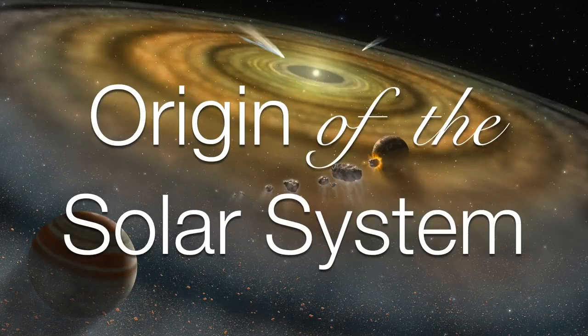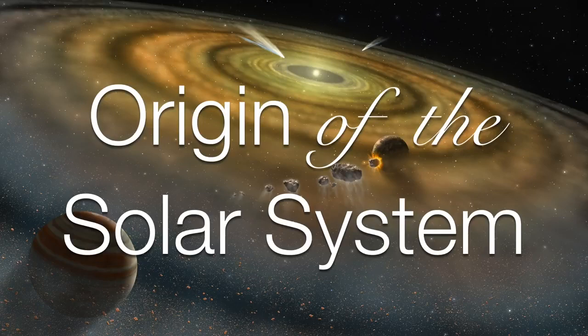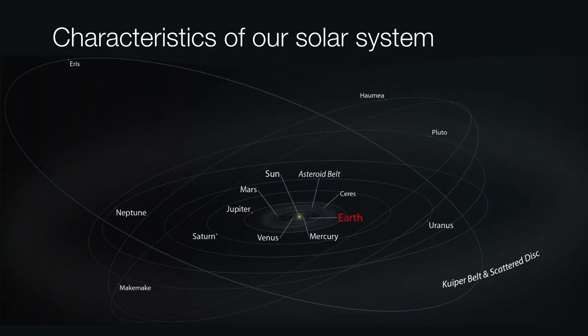Now that we have some idea of how star systems form, we can turn our attention to the formation of our own solar system. When we look around our solar system, we've got to remember there's a few characteristics that we want to keep in mind.